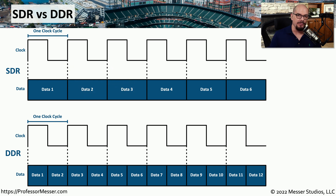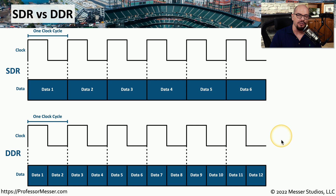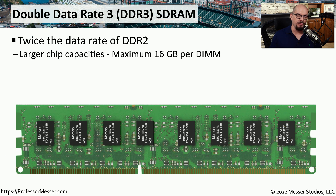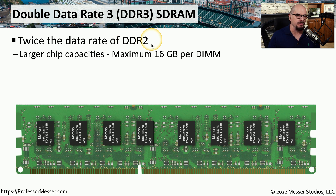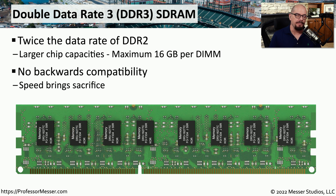Our modern systems use double data rate memory, or DDR, which can transfer twice in a single clock cycle — effectively twice as much as single data rate. As systems have evolved, we've updated our memory modules. DDR3 (double data rate 3) was an improvement over DDR2, allowing data rates twice as fast as DDR2 systems. DDR3 modules support a maximum of 16 gigabytes per module. There is no backwards compatibility, so the notch ensures DDR3 memory will only be installed on a system that supports it.